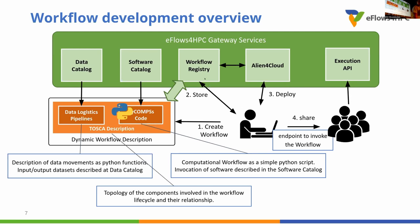Once the workflow is implemented, it is stored in the workflow registry. The developer can then use Alien4Cloud — one of the interfaces of the HPC workflow as a service — to deploy the service. This retrieves the workflow from the registry and deploys it to an infrastructure. Once deployed, it can be shared with end users who will use an execution API of the HPC workflow service interface to execute the workflow.